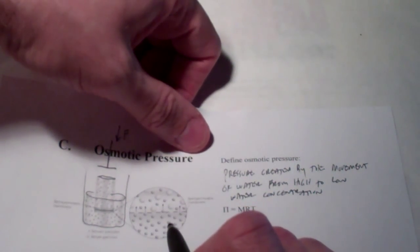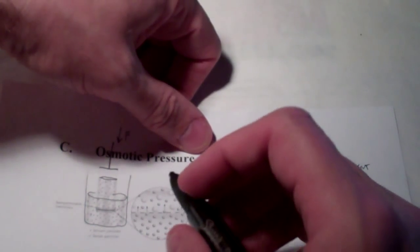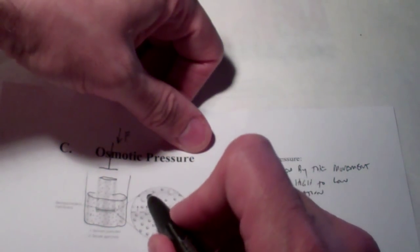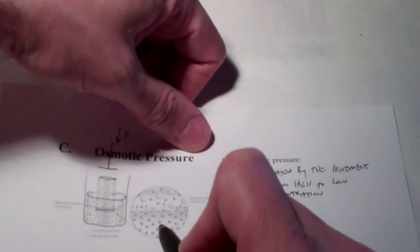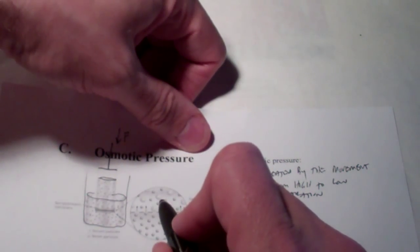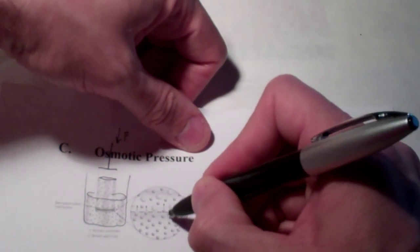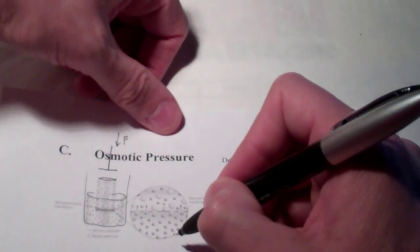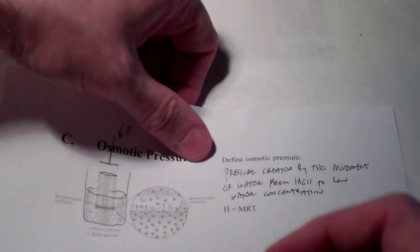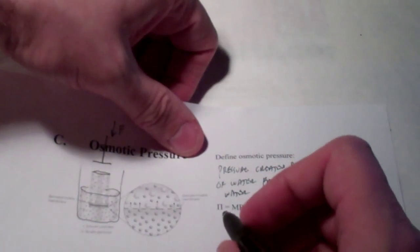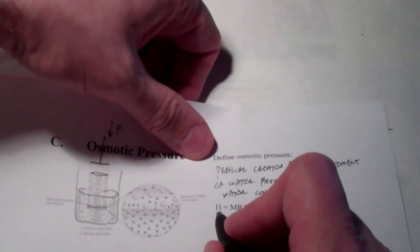At any rate, it turns out that osmotic pressure is, you guessed it, a colligative property. The higher the solute concentration, and it doesn't make a difference what it is, the higher the concentration of solute particles, the greater the force of water moving in, and the greater the osmotic pressure. Now, the symbol for osmotic pressure is the Greek letter PI capitalized.